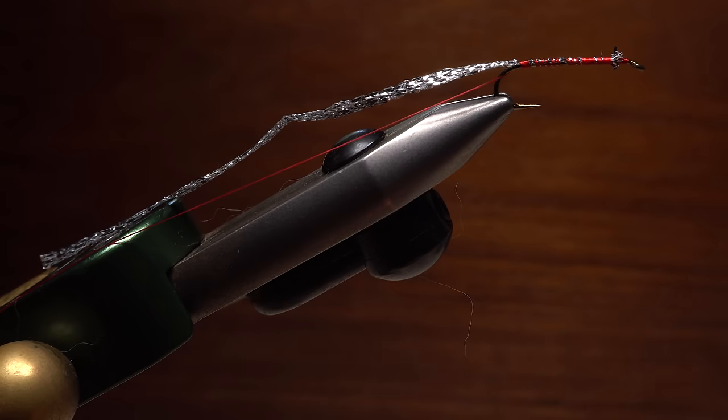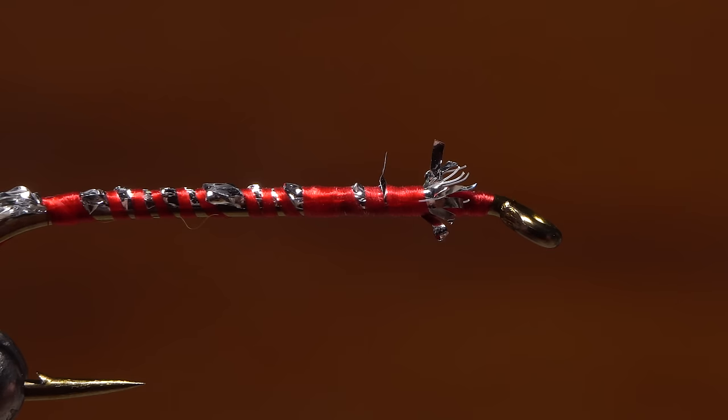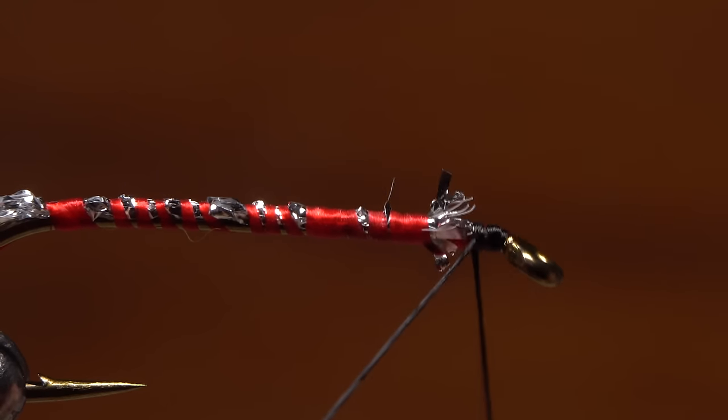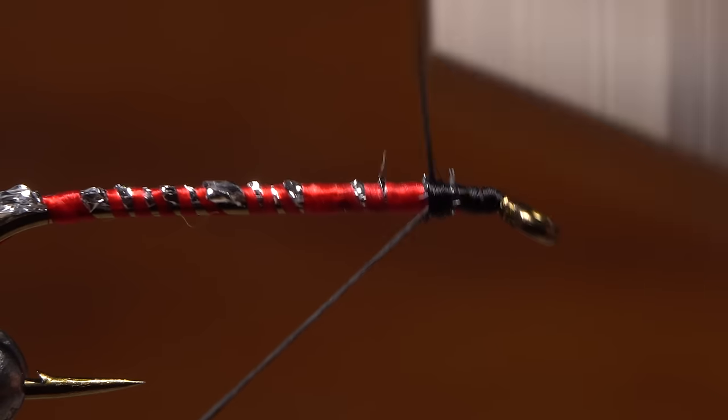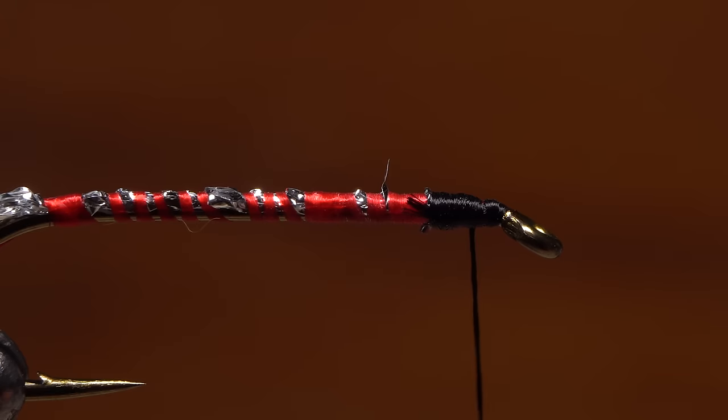You can then pull your thread back and out of the way. I hang my bobbin off the counterweight on my rotary tying vise. Now pick up the bobbin with the black thread and get it started on the hook shank behind the eye. After taking a few wraps rearward to lightly cover up the end of the braid, snip the excess tag end off close.